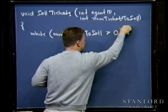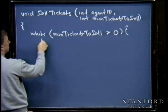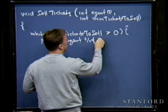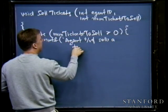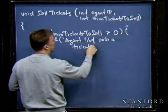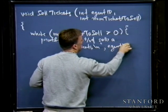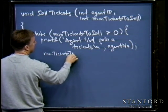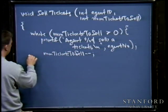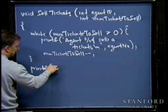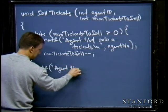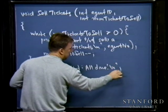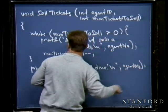Inside the while loop: printf 'Agent %d sells a ticket', agent_number, then num_ticks_to_sell minus minus. After the loop, printf 'Agent %d all done', agent_number. From a code standpoint it's moronically simple — I'm not trying to revisit for loops and while loops. What I'm more interested in is figuring out why this, as a simulation, is not all that good.